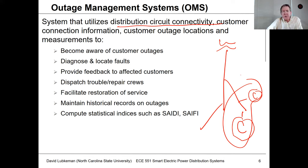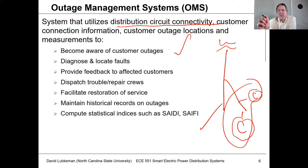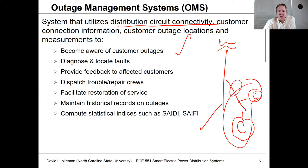What the outage management system does first is help you become aware of where outages are likely located and what's causing them. If a number of customers call in, you can trace this to a fuse, recloser, or whatever device operated. So it helps you diagnose and locate the faults.